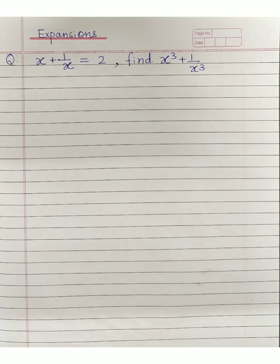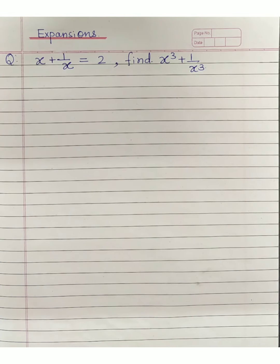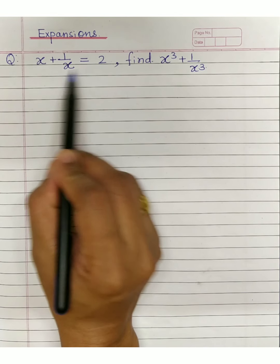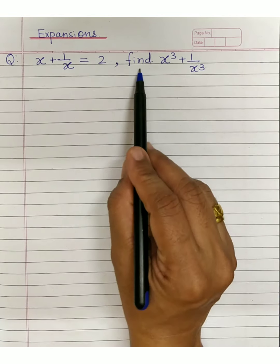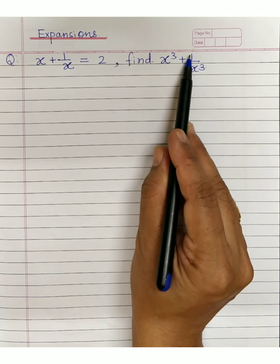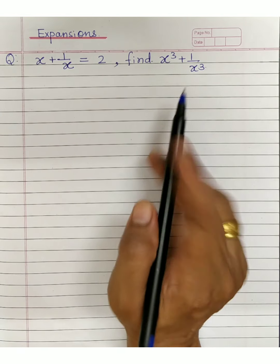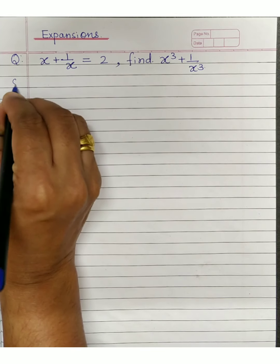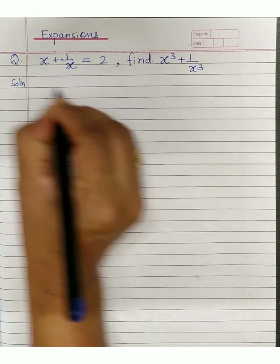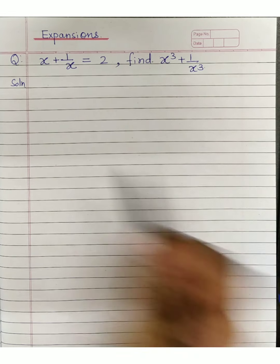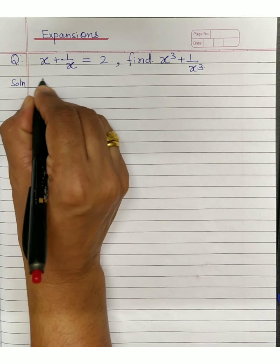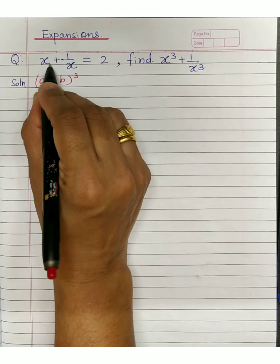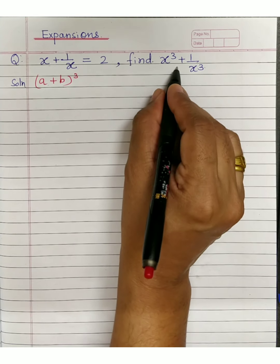Hello children, we are studying expansions today. The question is: x plus 1 upon x is equal to 2, and you need to find the value of x cube plus 1 upon x cube. First, recall which formula to use — the cubic formula, that is a plus b whole cube.